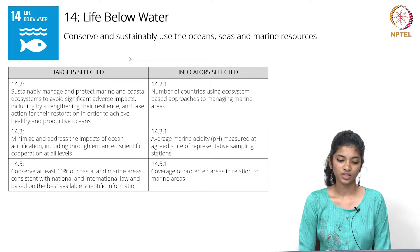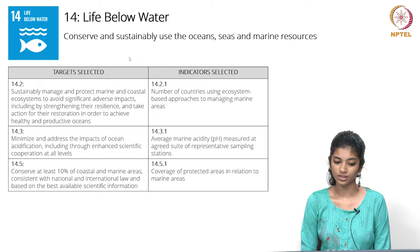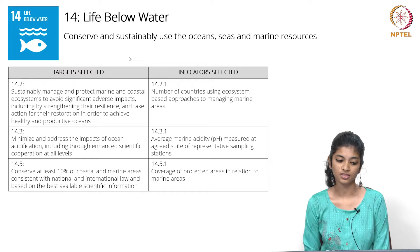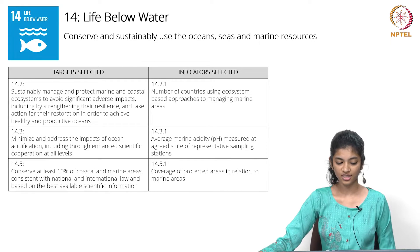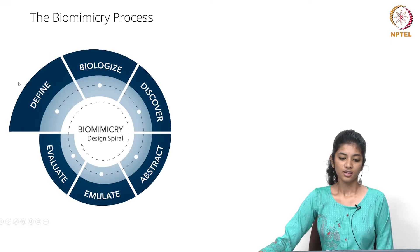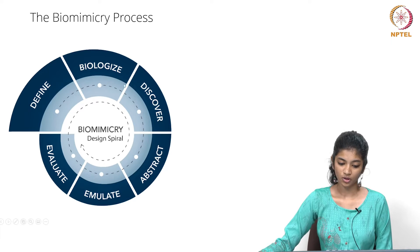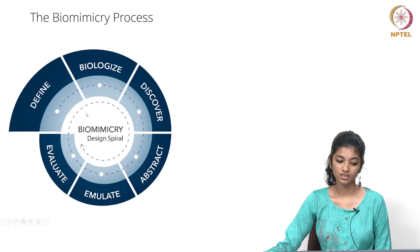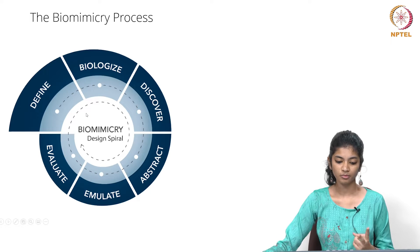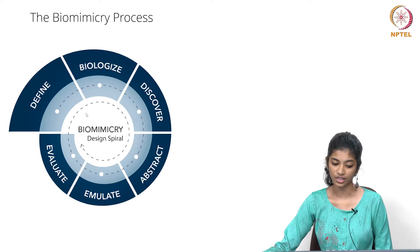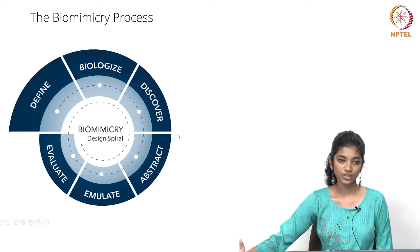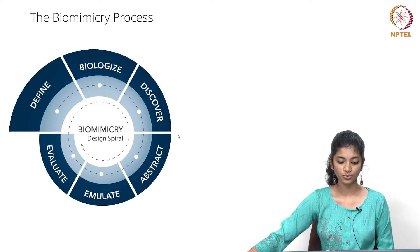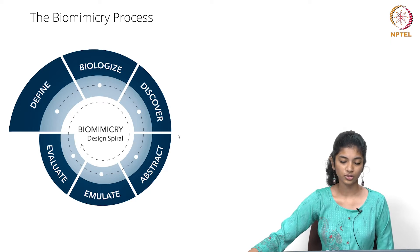Goal 14, Life Below Water, has the basic idea of conserving and sustainably using the ocean, seas and marine resources. I have chosen specific targets and indicators as the direction I want to work towards. Moving on to the biomimicry process, there are six steps: define, biologize, discover, abstract, emulate, and evaluate. This is called the biomimicry design spiral model, and this is how you systematically work toward finding an idea and coming to a solution.